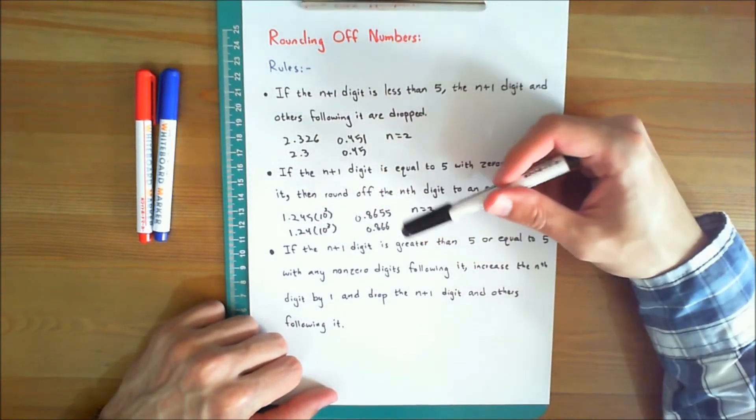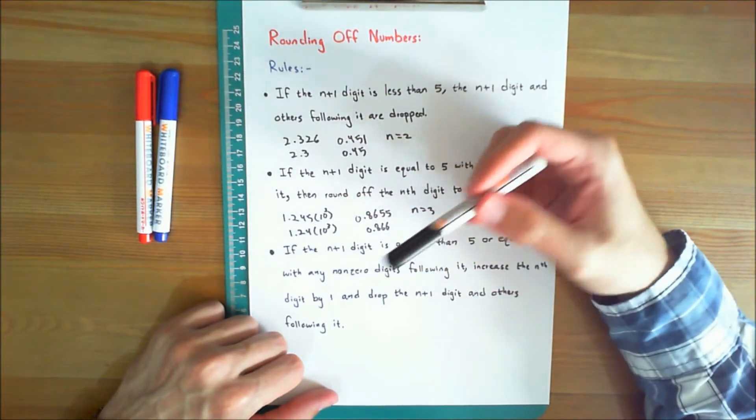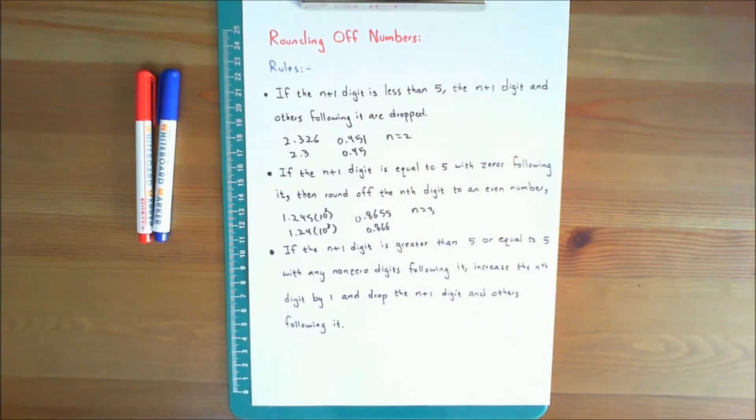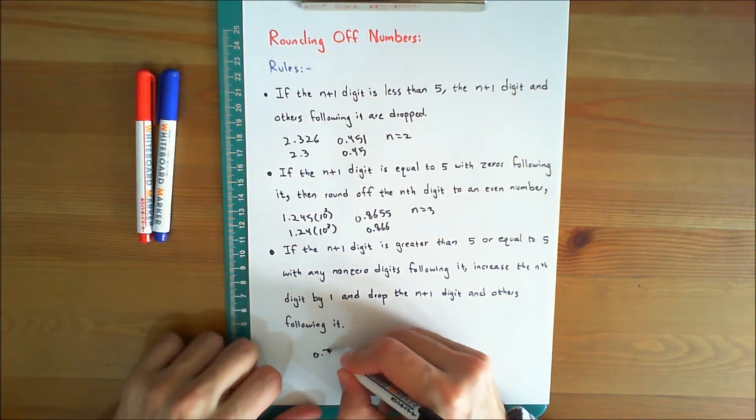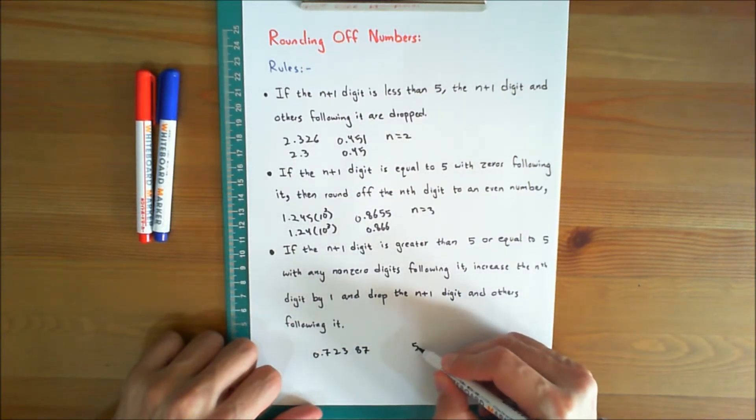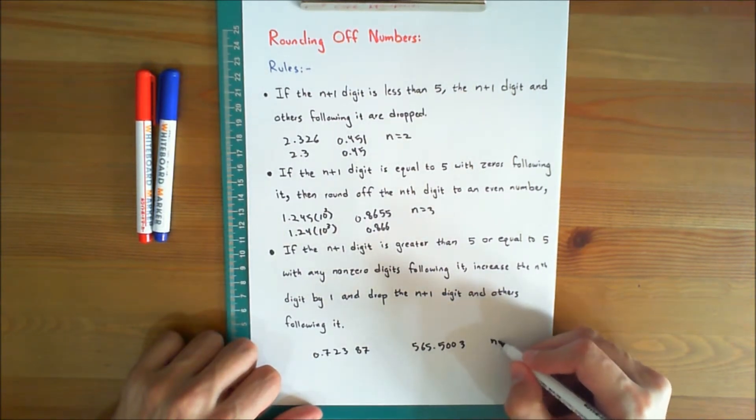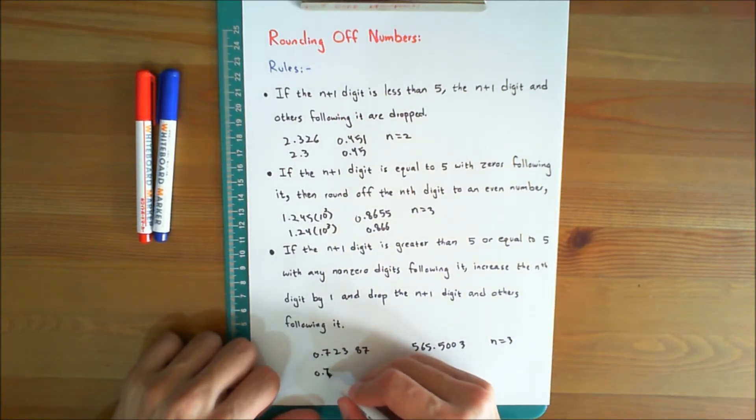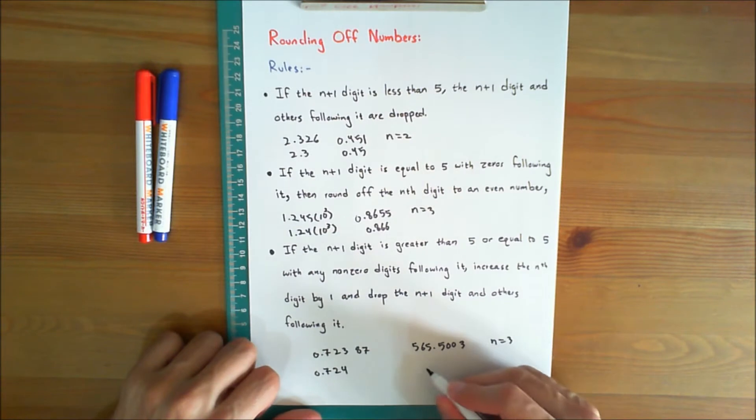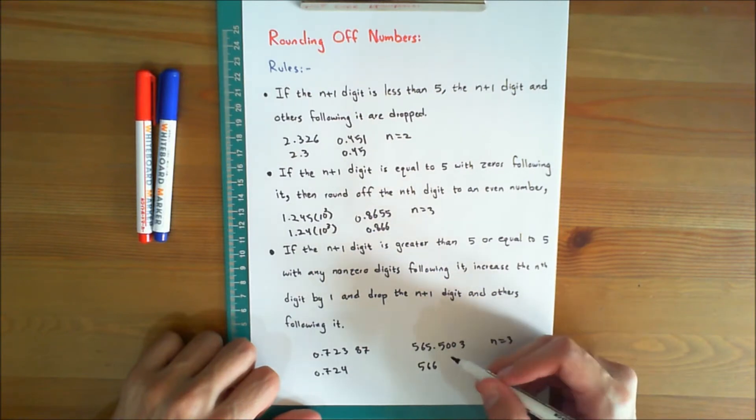If the n plus 1 digit is greater than 5 or equal to 5, with any non-zero digits following it, increase the nth digit by 1 and drop the n plus 1 digit and others following it. For example, 0.72387 and 565.5003 both rounded off to n equals 3 significant figures would be 0.724, since 8 is more than 5, so you round it off by adding 1 to 3, and 566, since 5 is equal to 5, and you add 1 to 5.